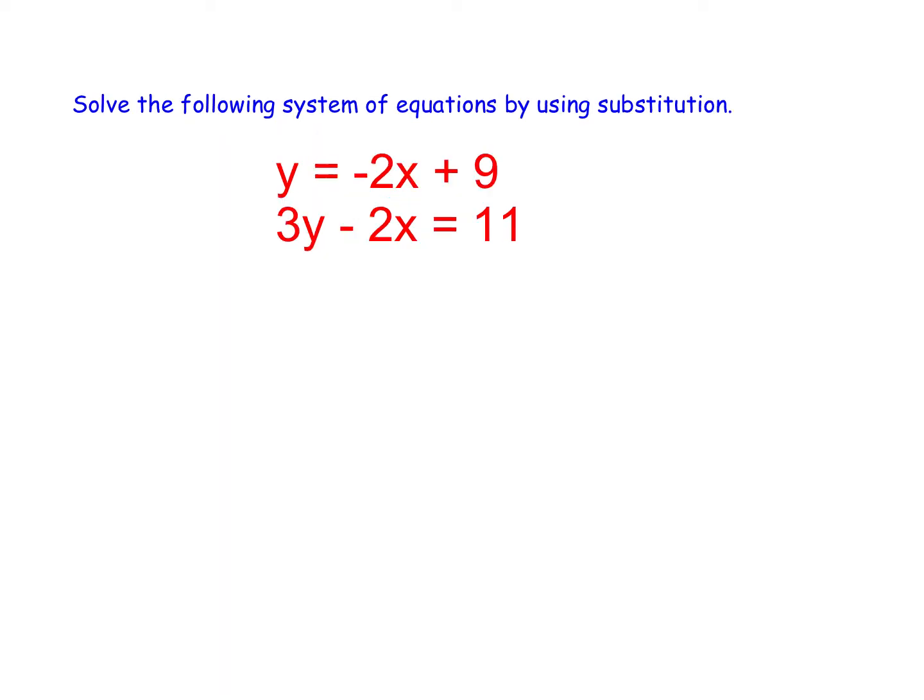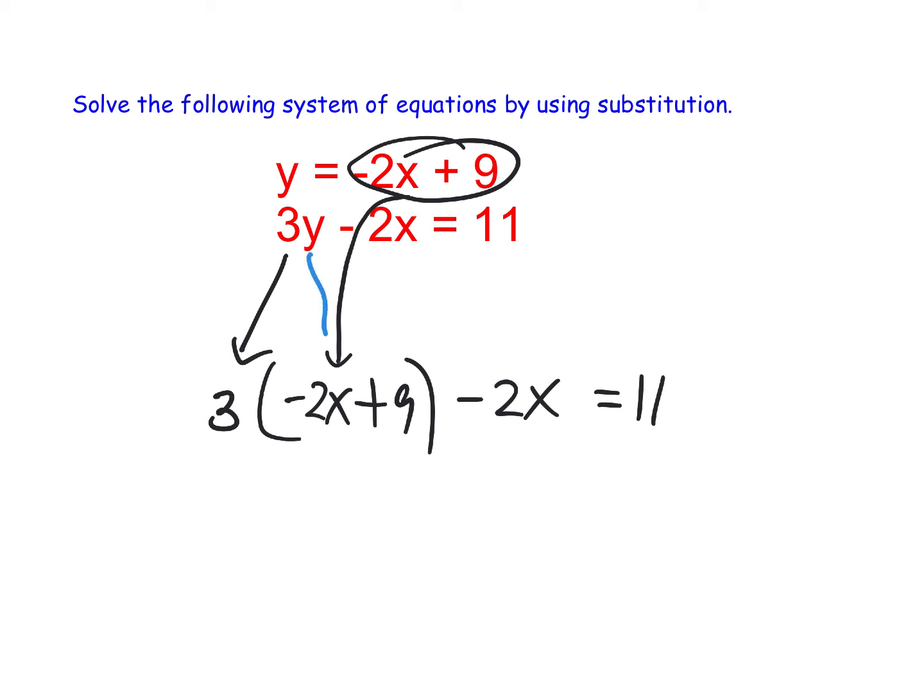All right. Now, they got a little bit harder, but not incredibly hard. Everybody solve this one. We're almost done. If you can just stick with me for another couple minutes, we're done. There. I stuck it in for y. See the y used to be right there? But I stuck in negative 2x plus 9. Trucky, can you multiply that out for me and tell me what you get next? Yeah, I got negative 6x plus 27 minus 2x equals 11. Perfect.